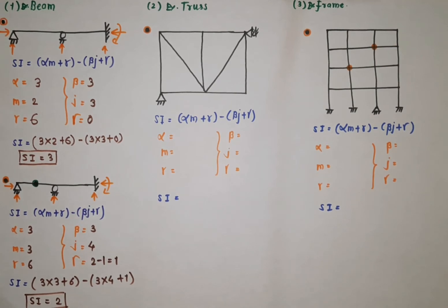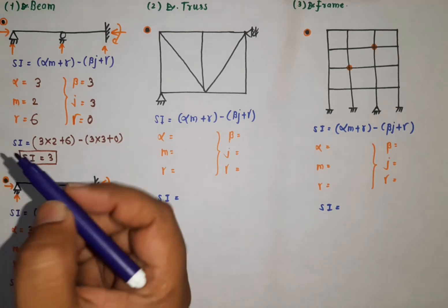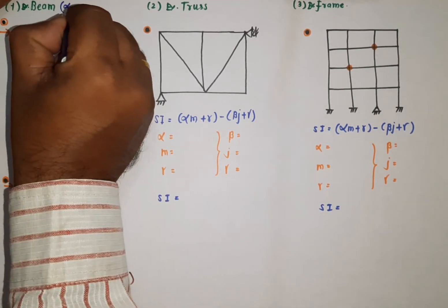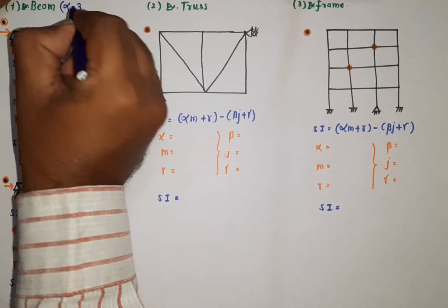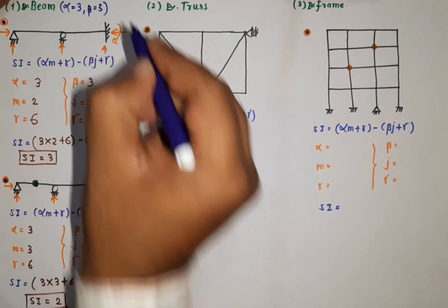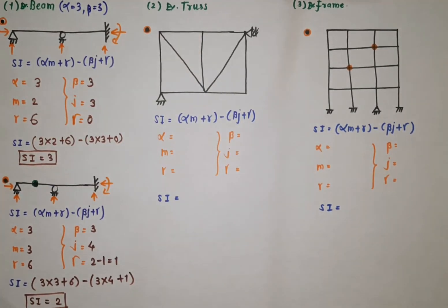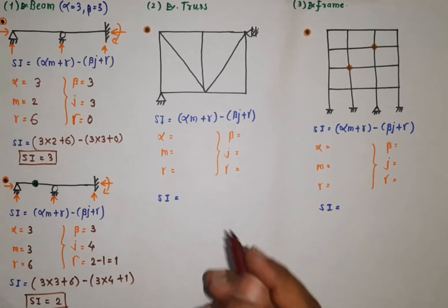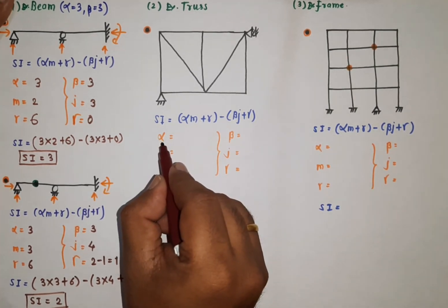From these beam problems, we can summarize that for a beam, α is always 3 and β is always 3. Let us now consider the next problem — a truss.